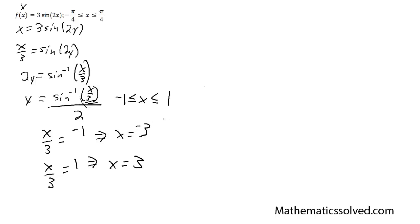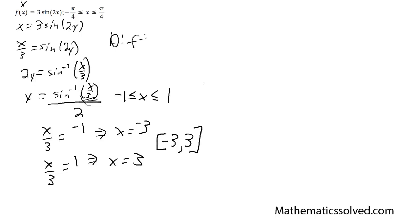The domain for the inverse function is going to be [-3, 3] in brackets because it includes the values. Our regular function is simply going to be negative infinity to infinity because you can include all values for that.